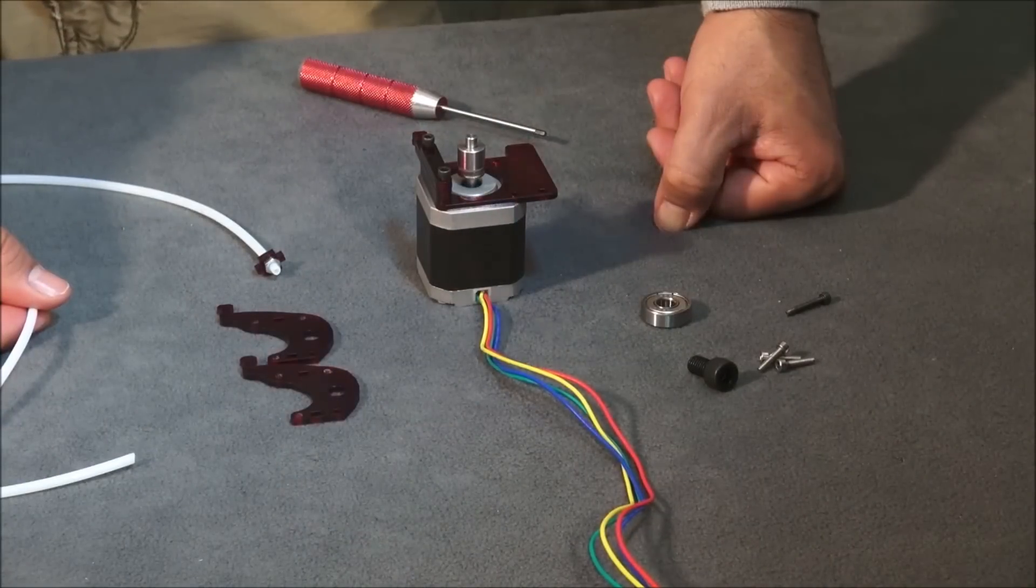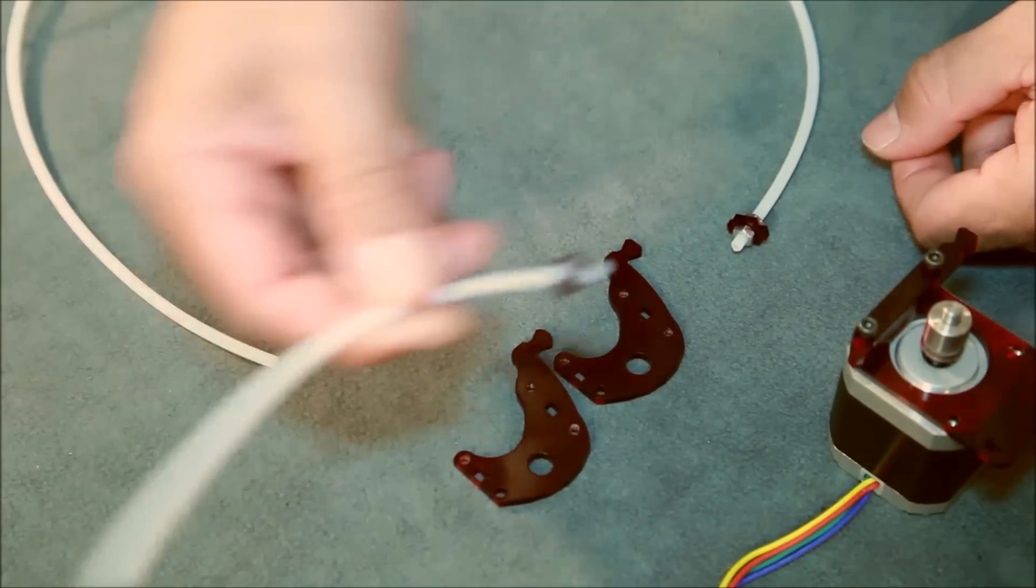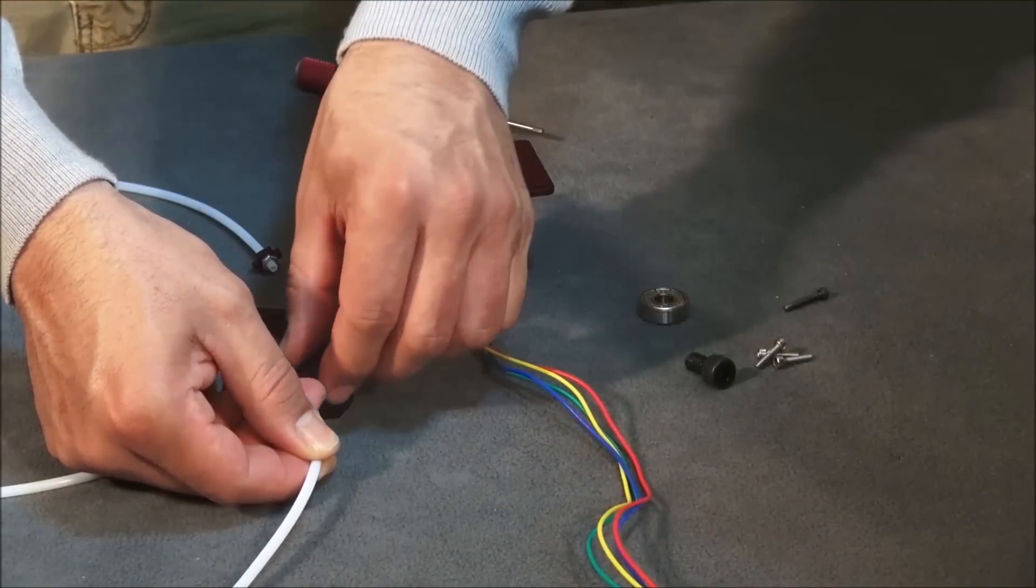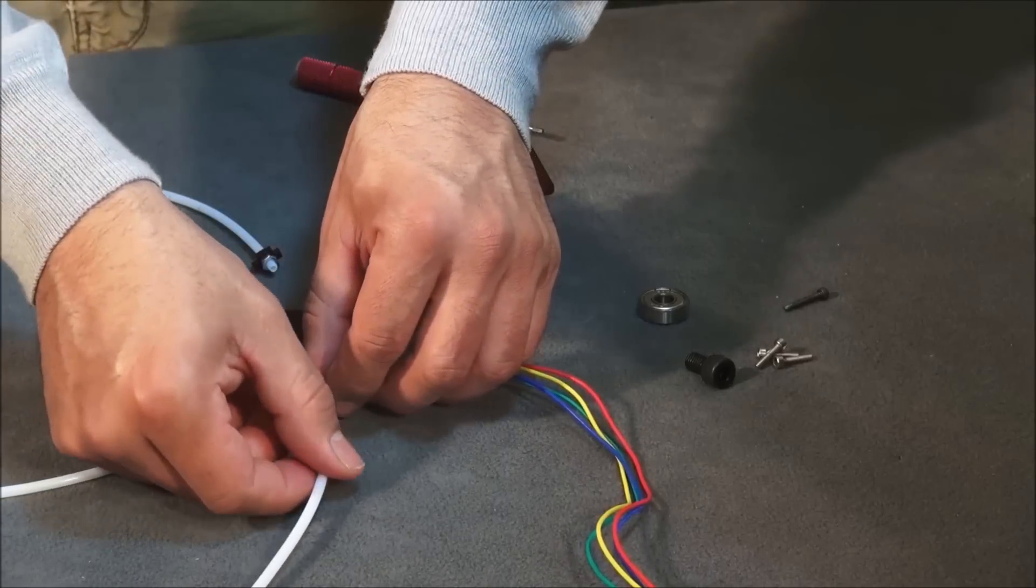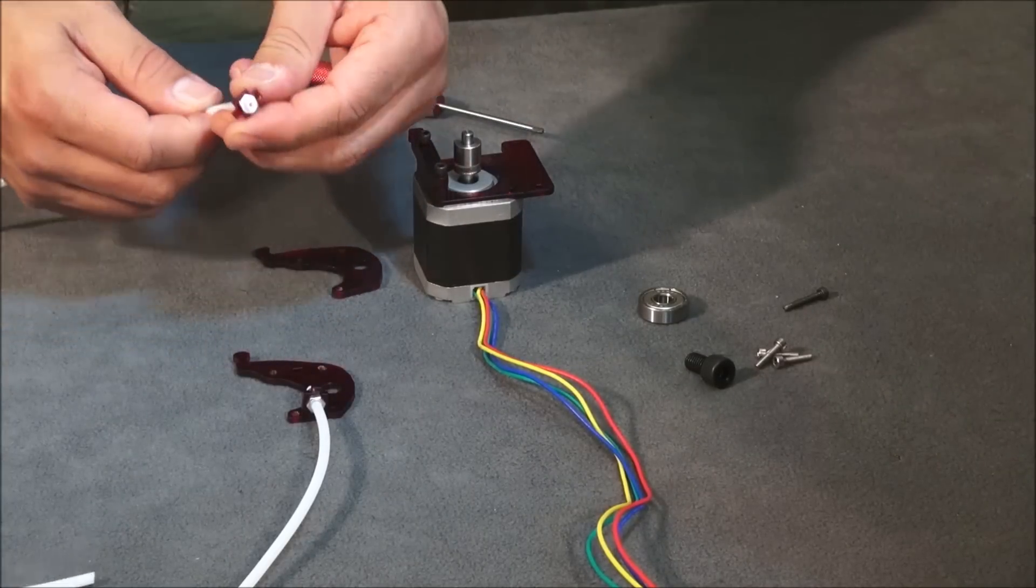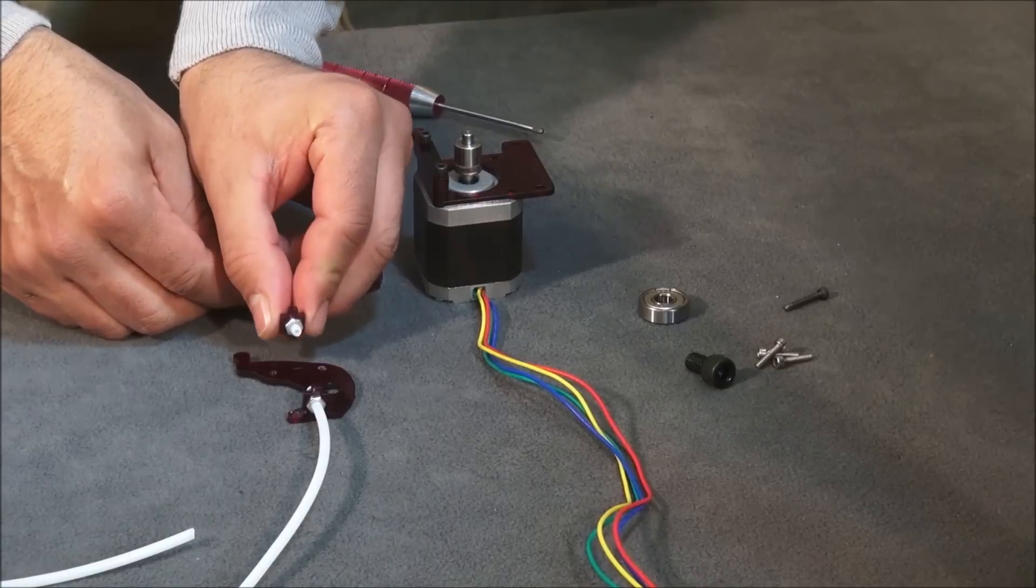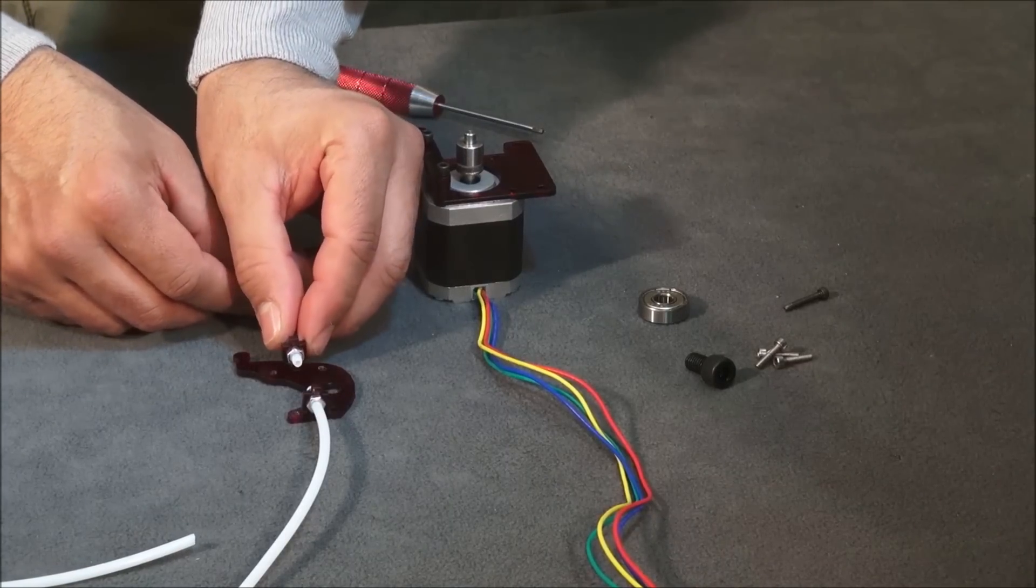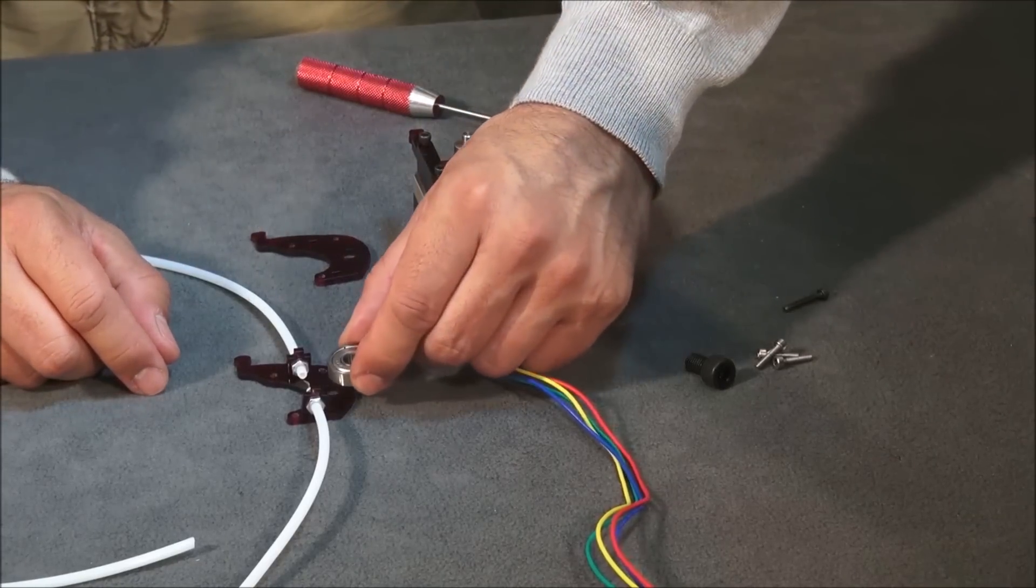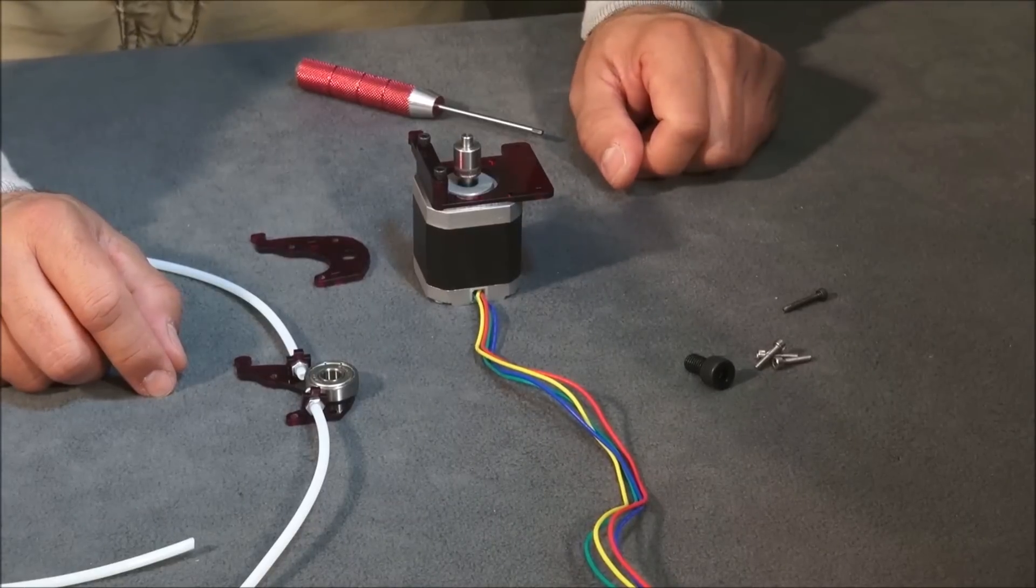Now we're going to take the pieces we put together earlier. You're going to take your smaller end and put it on this side in the middle hole. You'll take the longer end and put it on this side slot.